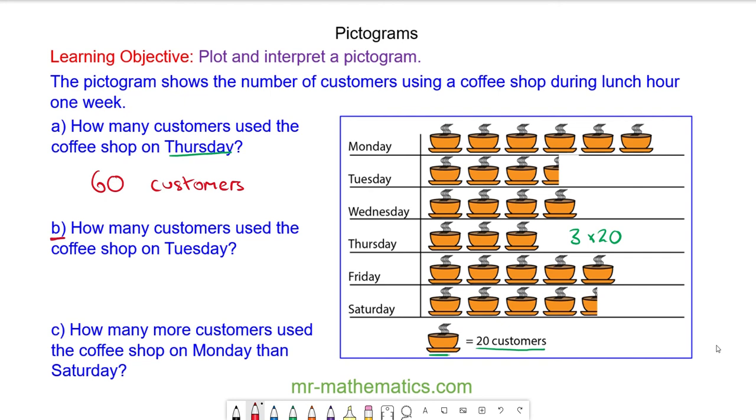For question B, how many customers use the coffee shop on Tuesday? So again we have three full pictures so three times 20. We have half a picture here which is half of 20 which is 10. So we have 60 plus the 10 which is 70.